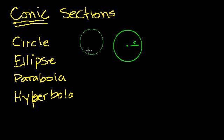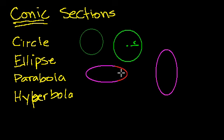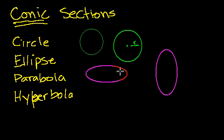An ellipse, in layman's terms, is kind of a squished circle. It could look something like this — it could be like that, or tilted and rotated around. Actually, circles are a special case of an ellipse — it's an ellipse where it's not stretched in one dimension more than the other. It's kind of perfectly symmetric in every way.